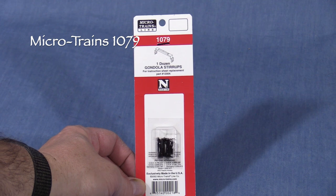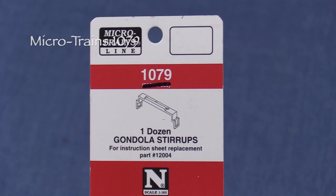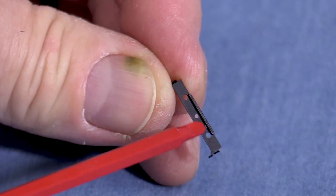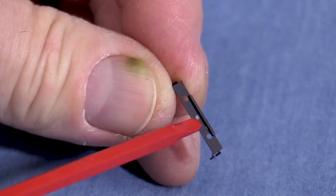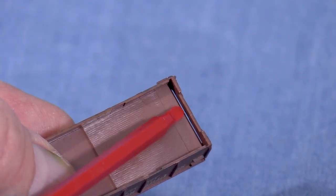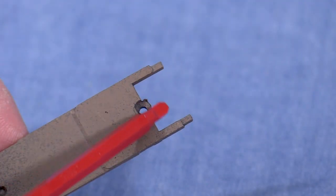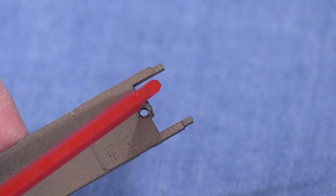I'll be using Microtrains part 1079 to replace the missing stirrup steps. There's a ridge on one side of the step assembly that should face toward the end of the car. There's a slot under the drop end that the ridge fits into. The ends of the car frame have indentations to hold the steps.